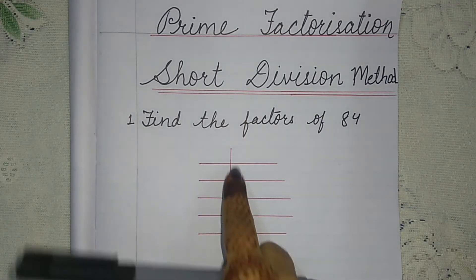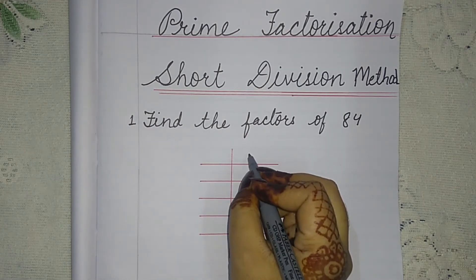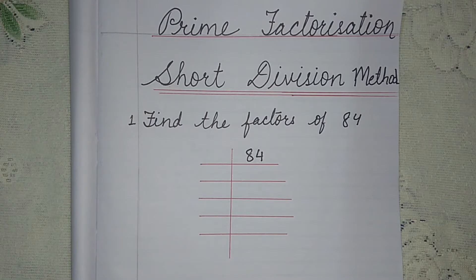What we will do is make this type of table and write 84 here. Now 84 is an even number, and as we all know that even numbers can be divided by 2.